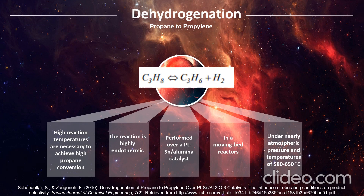For dehydrogenation, propane undergoes dehydrogenation to produce propylene and release hydrogen gas. High reaction temperatures are necessary to achieve high propane conversion. The reaction is highly endothermic and is performed over a platinum-alumina catalyst in a moving-bed reactor under nearly atmospheric pressure and a temperature of 580 to 650 degrees Celsius.